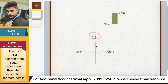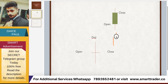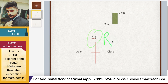Normally they say whenever a doji comes, a reversal happens. For example, if candles are going up and you get a doji, they say it is a reversal. Same way, when the market is going down and you get a doji, they say it is going up. But as per my experience, not every time is it correct — sometimes the market continues to go up even though a doji comes.